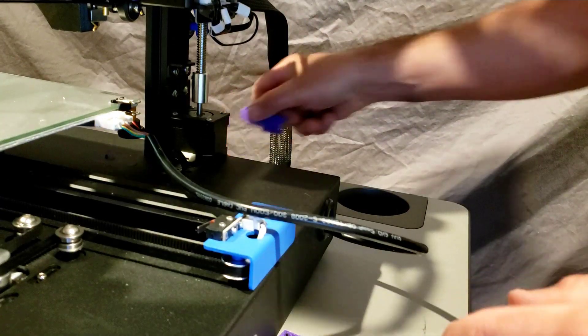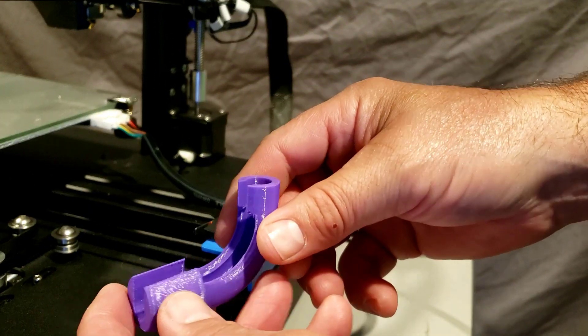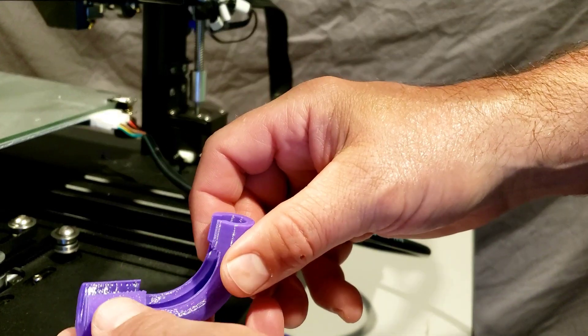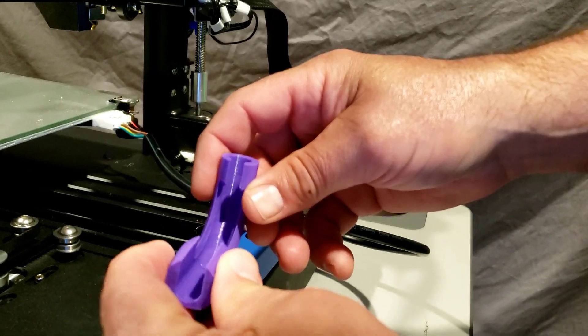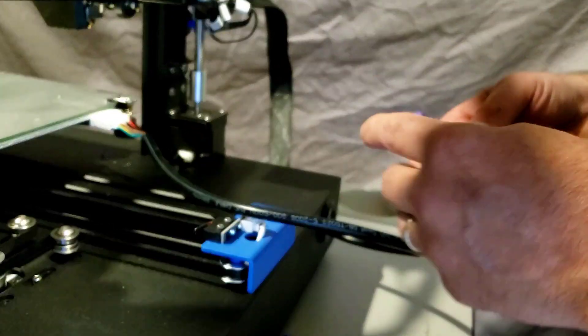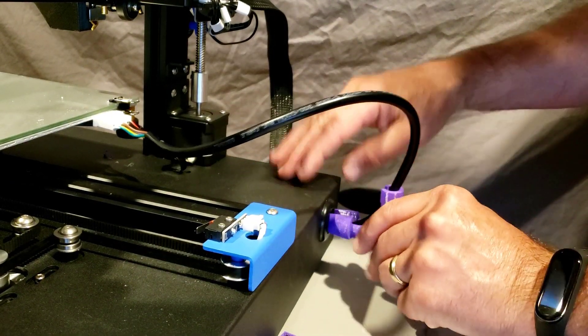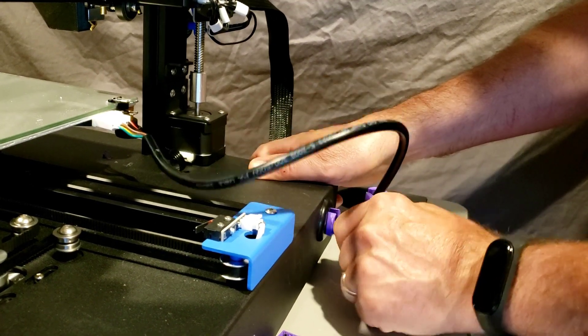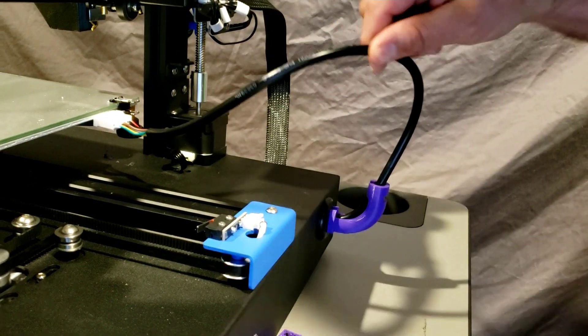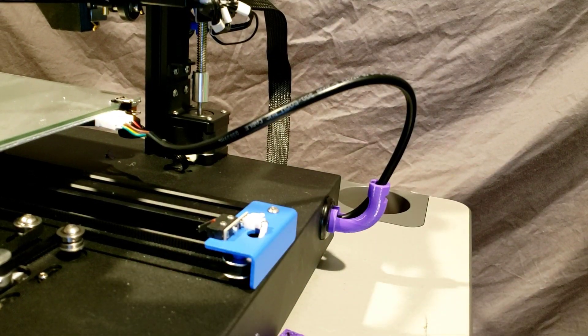So I have taken the time to design version two. I will put a link in the description if you're interested. You can see this is much stronger and it fits closer to the exact size of that cable. It's got a nice little connector to hold it in place and then when you slide it in you can lock it in pretty good and it keeps that cable up out of the way.